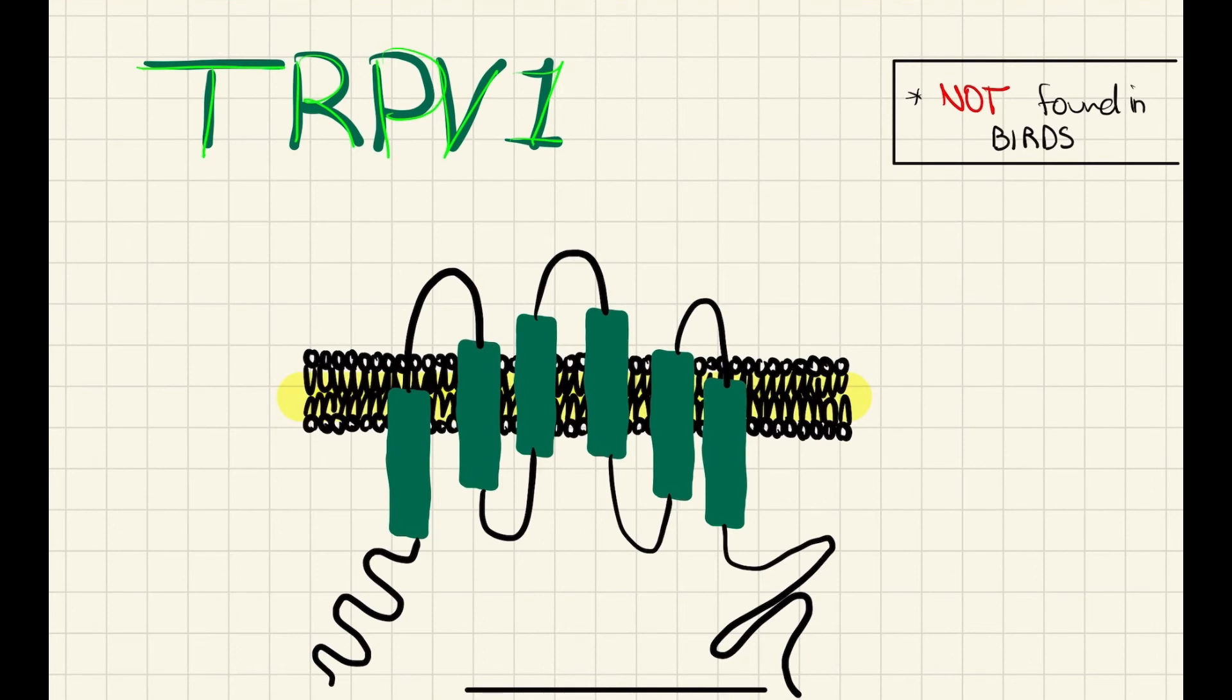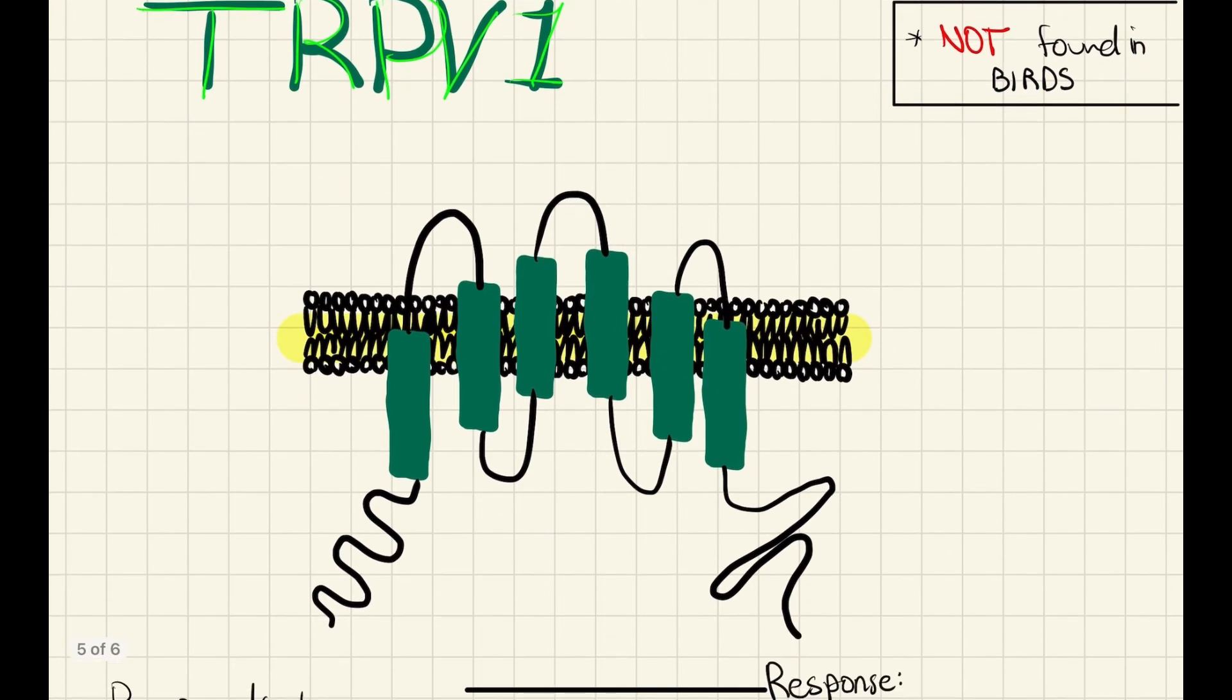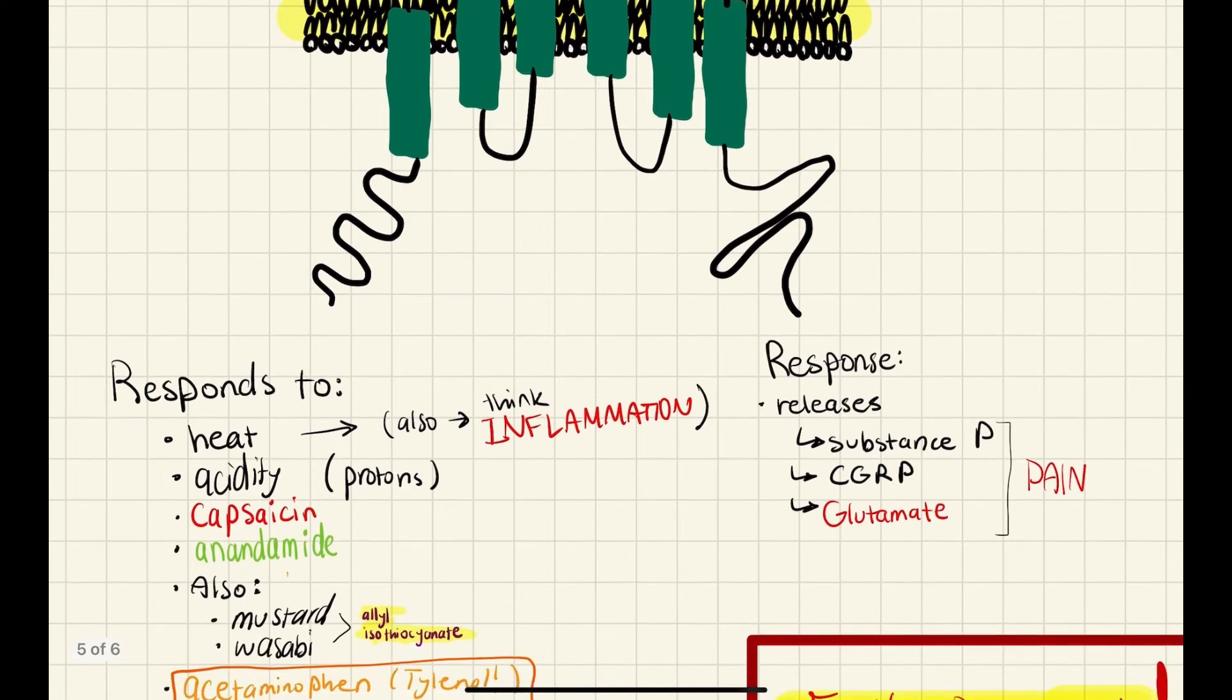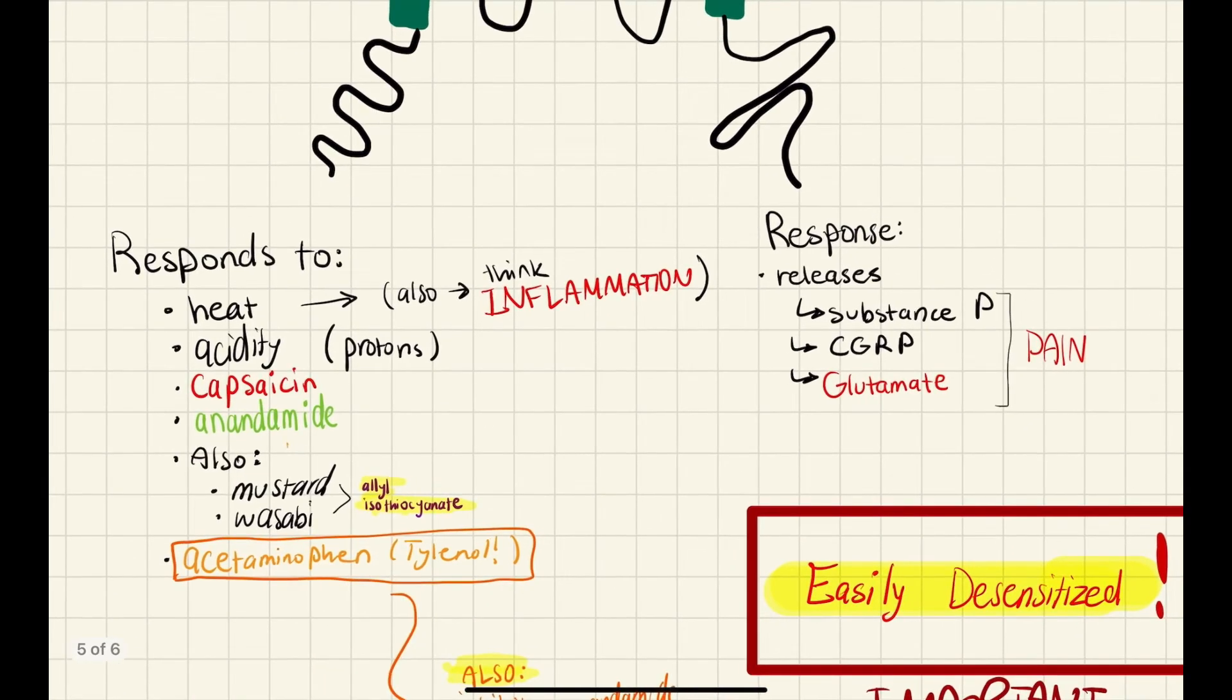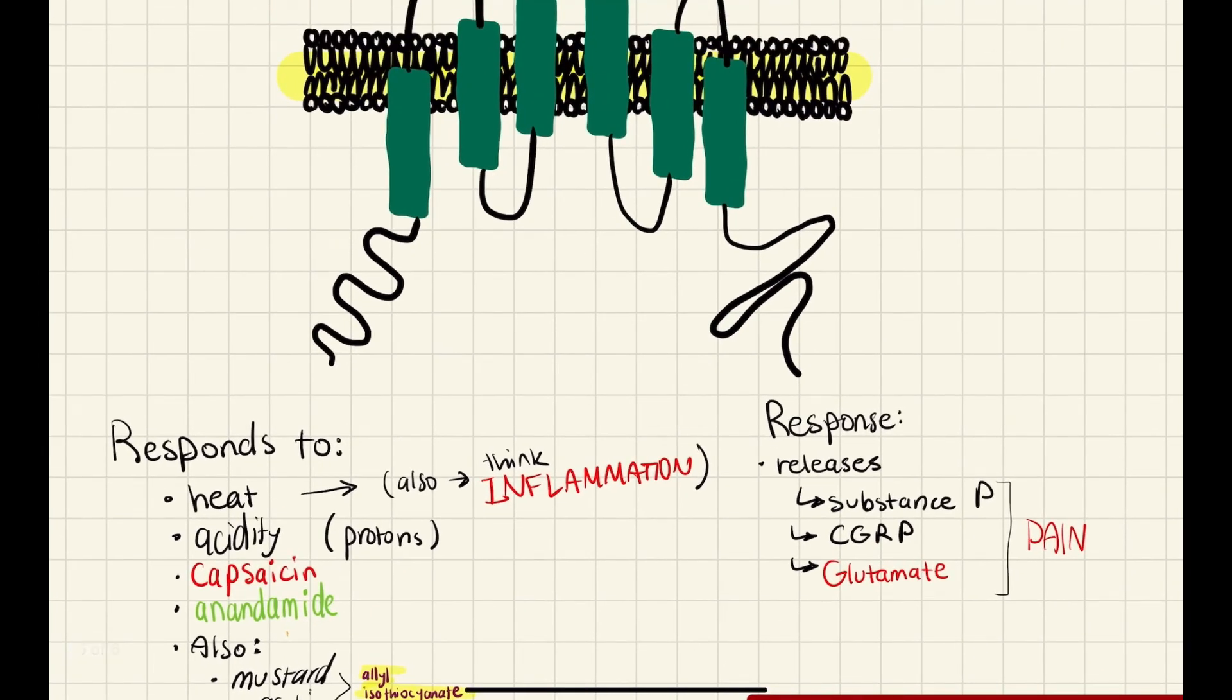We'll also be looking at TRP-V1 receptor, another nociceptor in your body. It's not found in birds, which is interesting. And I'll say an application for that later on, which was mentioned in class. But your TRP-V1 receptors are basically, it may look like a GPCR, but they're a vanilloid receptor. So it acts similar to that, but it has six transmembrane loops. It responds to a variety of different things. So acidity, like protons, is one. Anandamide, which you're familiar with. But mostly heat or drugs that are similar to producing that effect, like capsaicin. So what that means is that when you think of heat, think of inflammation. When you have inflammation, it's often accompanied by heat, and that's actually what's triggering these, and that's what links it to the pain system.